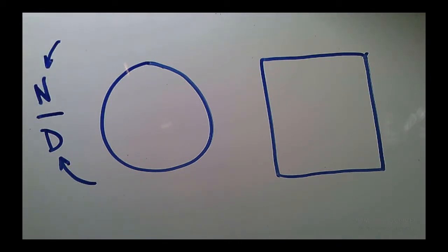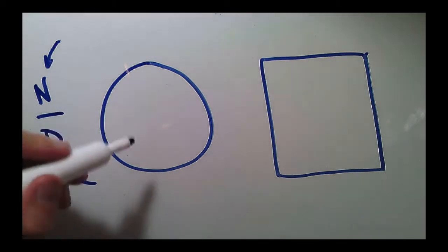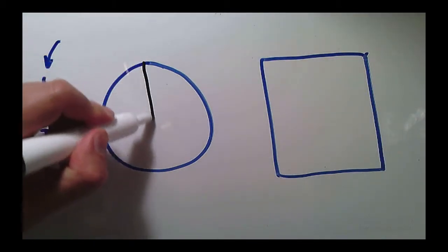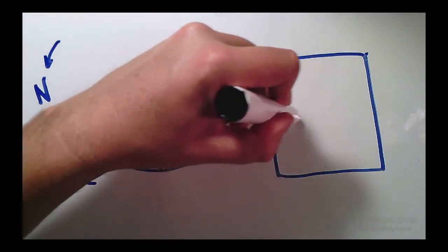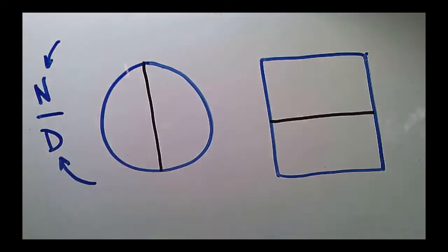So for example, if I wanted to show 1 half with this circle, I'm going to cut it into two pieces. Same thing with this square, I'm going to cut it into two pieces.